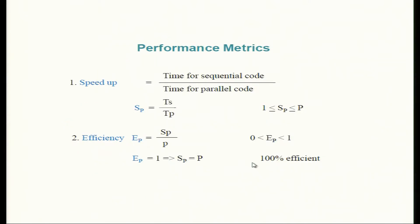Speedup is sequential time divided by parallel time, and we expect it to be near the number of parallel processes. Efficiency is speedup on P processes divided by the number of processes — it gives effective utilization per process. Yesterday in the summation program, on 40 cores we got 20 times speedup — that is 50% efficiency: speedup 20 divided by 40 processes equals 0.5. We must understand on what machine size our program will be efficient.